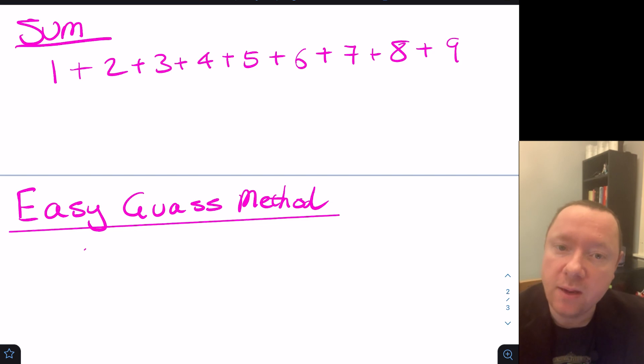Gauss actually came up with a method for this when he was in school. If you've seen any of my videos before, you've seen me talk about this. Gauss came up with the idea that if you pair the first and last number, and then the second last and the second number, and the third last and the third number, they all make the same total, in this case 10.